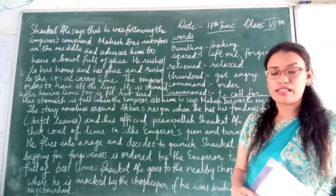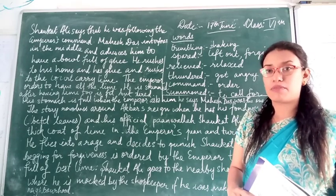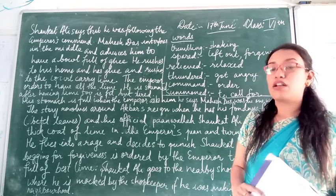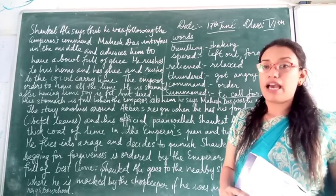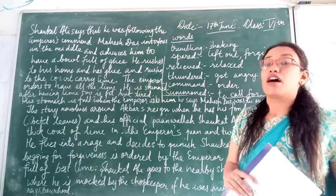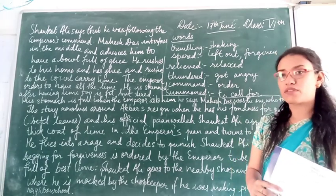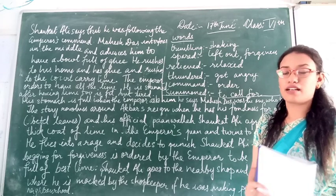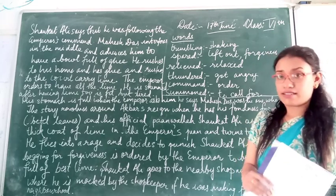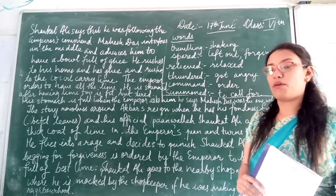When he goes to the court, the Emperor is still filled with anger and orders the Paanwala to eat the sack full of lime. When Shaukatali starts eating the lime one by one, his stomach starts churning — but still he is okay. Even after finishing a bag full of lime, the Emperor is surprised and stunned. He asks, 'What is the matter? How is he still okay after having all this lime?' Then Shaukatali explains that while on the way to buy lime, he met a person named Mahesh Das, who advised him to have a bowl full of ghee before going to the court.